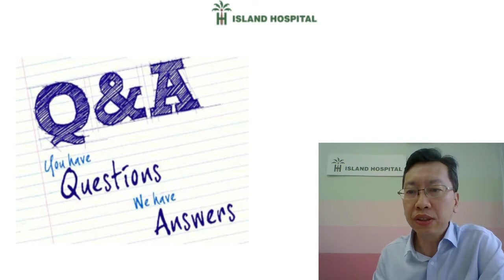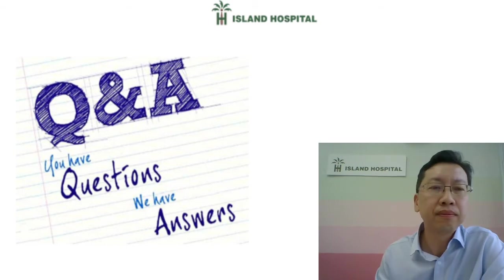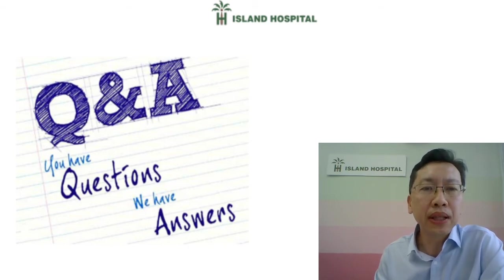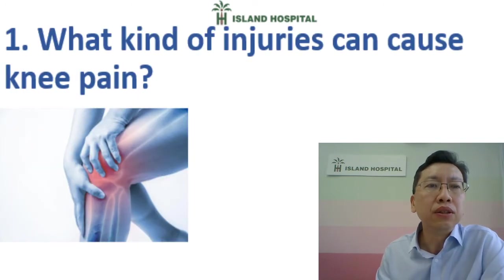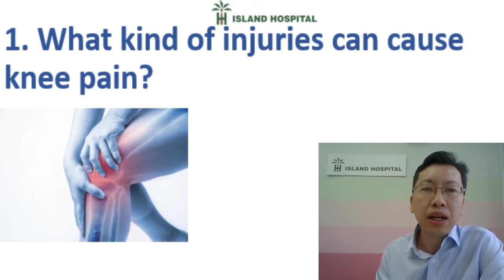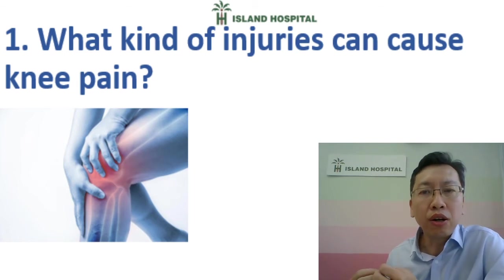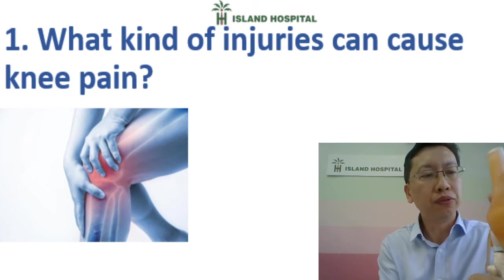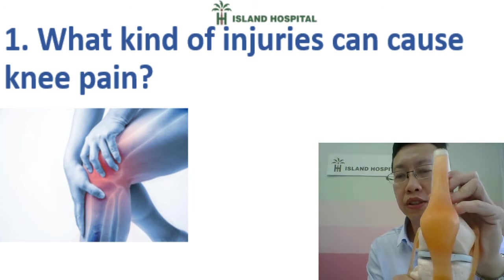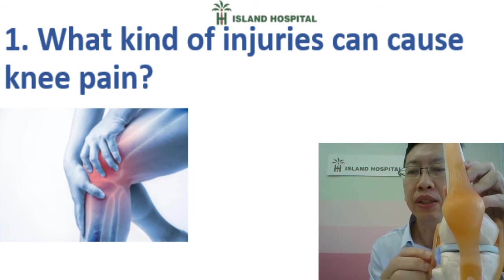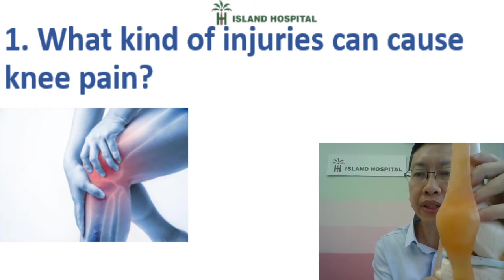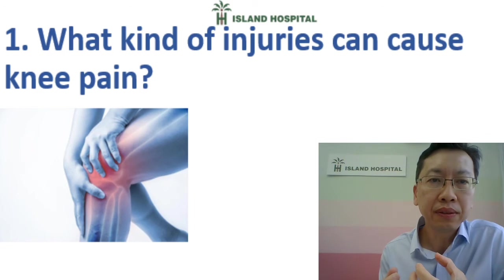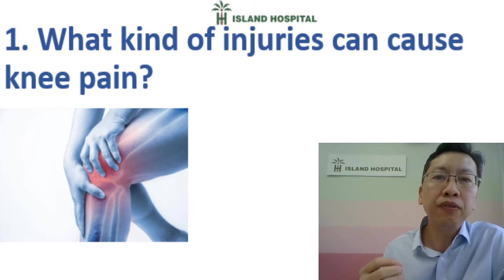Is there any questions? The first pre-submitted question: what kind of injuries can cause knee pain? Any sports injury like twisting your knee can cause a ligament injury, which may cause instability of your knee joint. Ligaments hold the knee joint together so we can move properly. If you have a ligament injury, your knee may twist a little when you walk, and this instability causes more friction and more wear and tear to the cartilage.